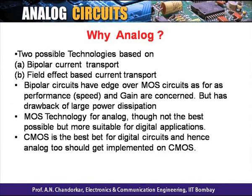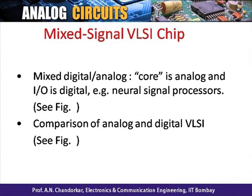Two possible technologies for analog circuit implementation: bipolar — current transport via bipolar transistors — and field-effect-based MOS transistors. Bipolar circuits have an edge over MOS in performance and gain but have large power dissipation. MOS technology for analog is not the best compared to bipolar, but it is much more suitable for digital applications. CMOS is the best fit for digital, and hence analog should also be implemented on CMOS — not because it is better for analog, but because most chips will be mixed signal, combining both analog and digital.